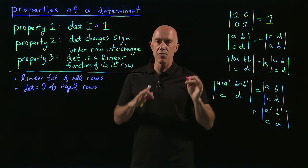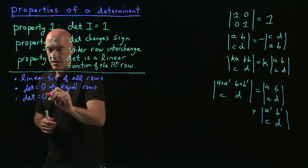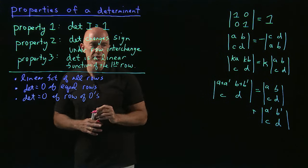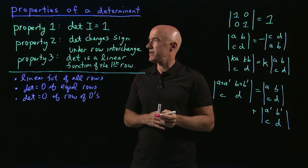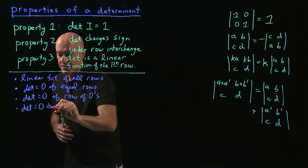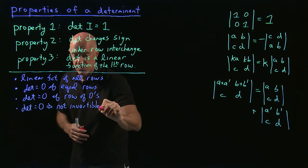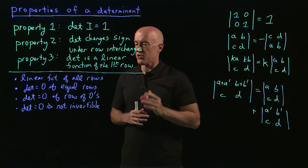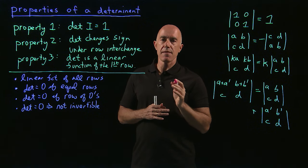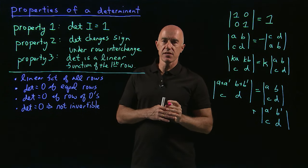The determinant equals zero if you have a row of zeros — if one of the rows is all zeros, the determinant is zero. A key result is that determinant equals zero implies the matrix is not invertible: if the determinant of an n by n matrix is zero, that matrix does not have an inverse, and Ax = b does not have a unique solution.